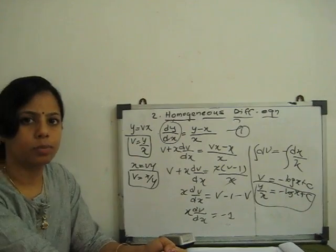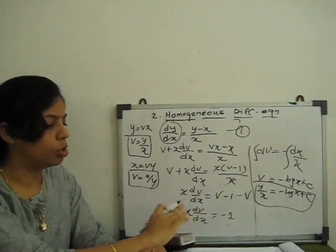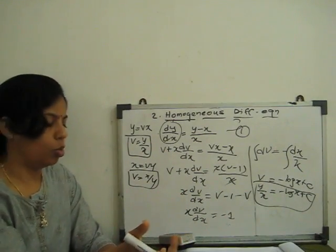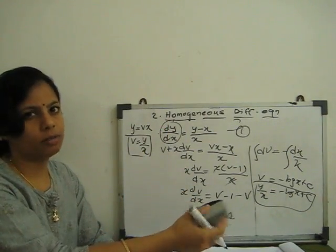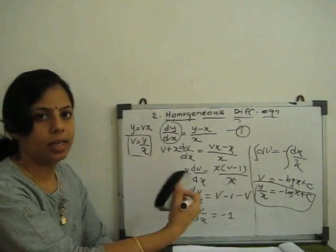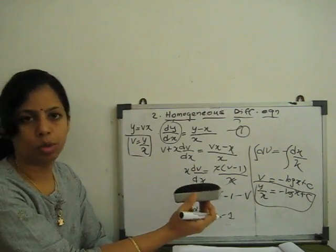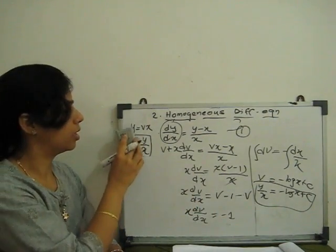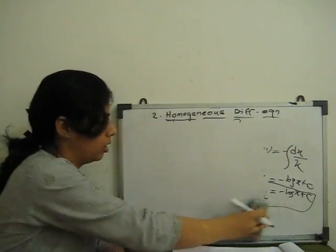After substitution you see it converts into variable separable — simply solve as variable separable. At the end, back-substitute v. If y = vx then v = y/x; if x = vy then v = x/y. Remember your substitution, and then give the final solution. The process is longer but not very difficult — it is very easy if you do it by hand.